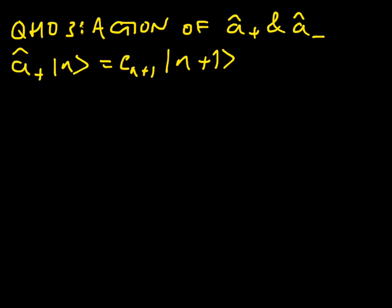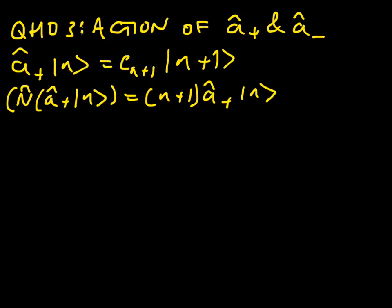We know that N hat acting on A plus acting on N is equal to N plus 1 acting on A plus acting on N. But that doesn't tell us anything about what A plus on N gives us, which is that we could have any multiple at all of N plus 1 in there, so we need to deduce that.